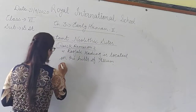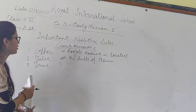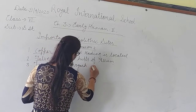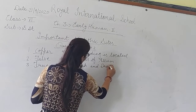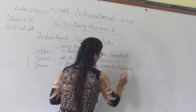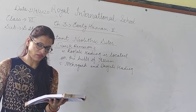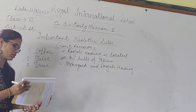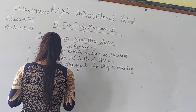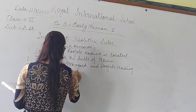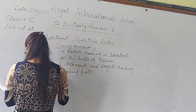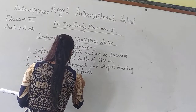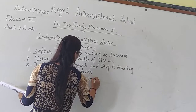Daojali Hading is located on the hills of Assam — this is the Neolithic site located there. Question 3: Early men worshipped nature — true, early man worshipped nature. Question 7: the word 'khalkos' means copper.